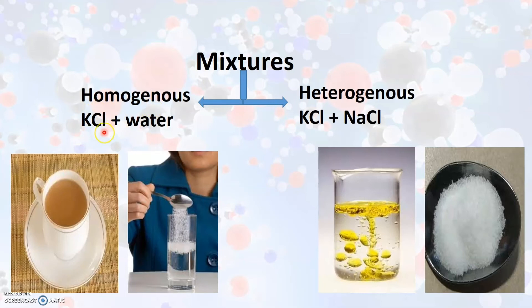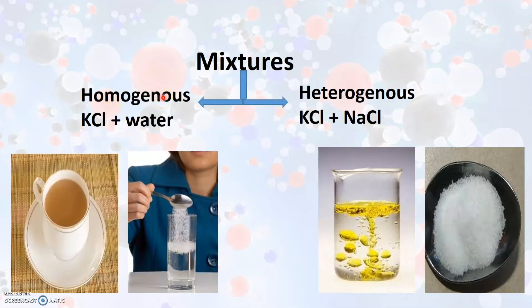Another example of a homogeneous mixture is potassium chloride mixed with water. When we mix potassium chloride with water, it easily dissolves. In that solution, there is the same composition throughout and it has a uniform appearance after mixing. Therefore, this is also an example of a homogeneous mixture.